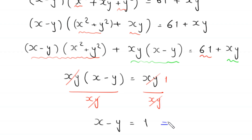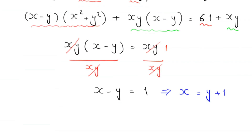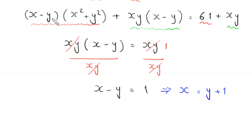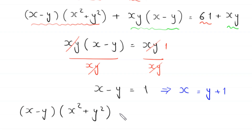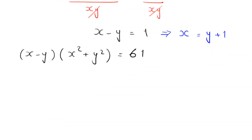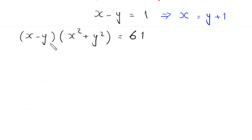From this equation, if we move this negative y to the right hand side, then this implies that x is equal to y plus 1. Now we write the other comparison: x minus y times (x squared plus y squared) equals 61, giving us a new equation: x minus y times (x squared plus y squared) is equal to 61.